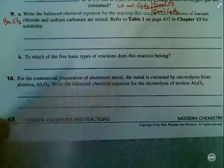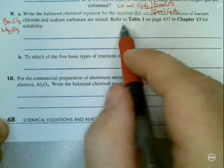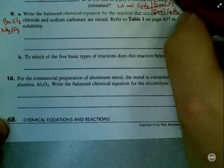Barium chloride. Let's see, barium is in main group 2, so that's going to be barium chloride and sodium carbonate are mixed. Refer to Table 1 on page 437.